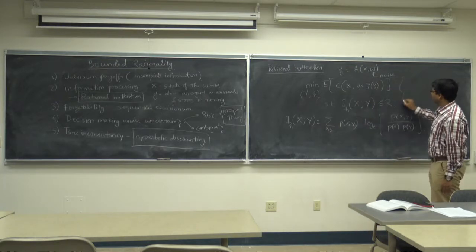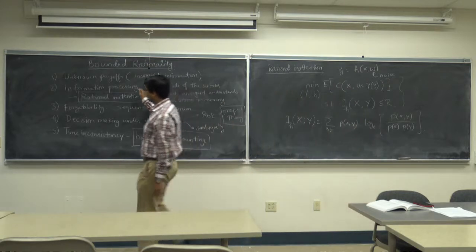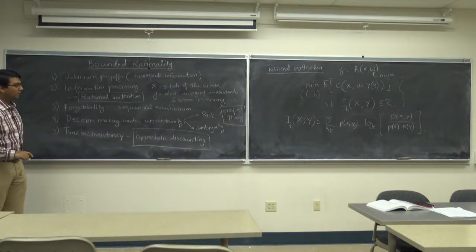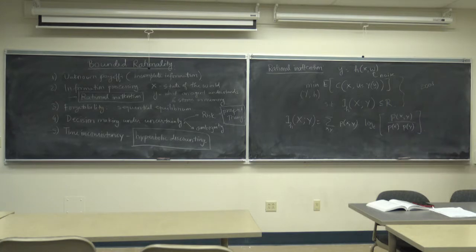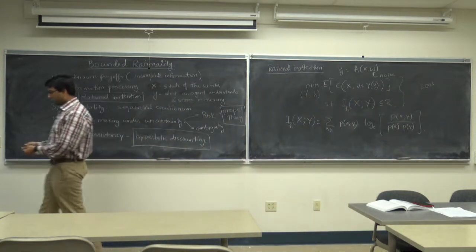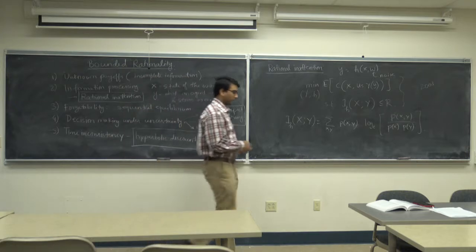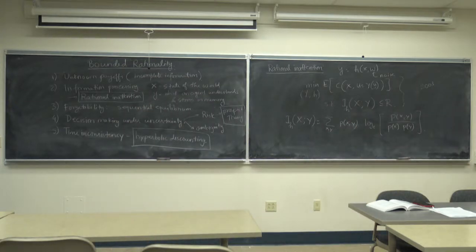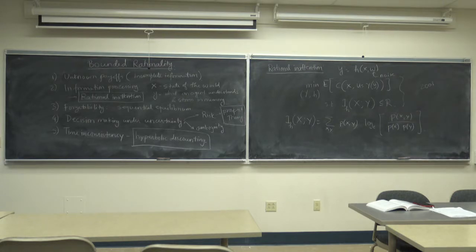If you want to model a decision maker with limited information processing capabilities, this is one way that has been proposed — back in 2003 or 2002. One model where you explicitly enforce some sort of information processing constraint on the decision maker. That's the rational inattention model. For games, I haven't seen any paper that studies rational inattention, so something that might be good to think about.